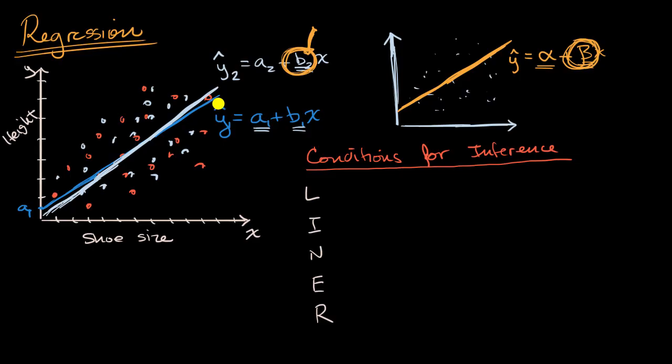So the L right over here actually does stand for linear, and here, the condition is that the actual relationship in the population between your X and Y variables actually is a linear relationship. So actual linear relationship between X and Y.